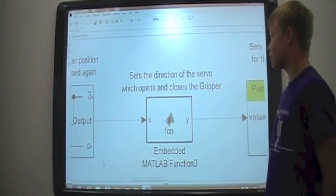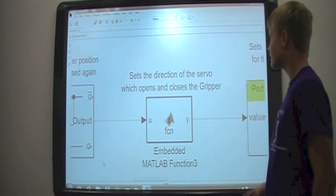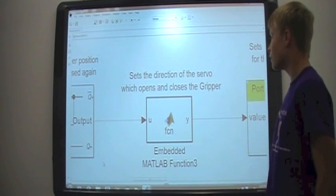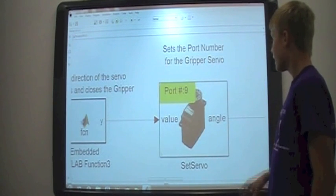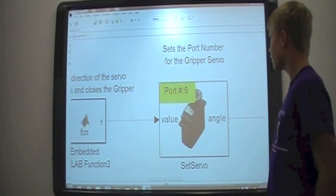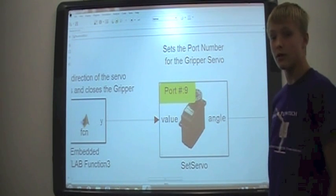And this is the MATLAB function block that was used on our gripper and it sets the direction of the servo which opens and closes the gripper. This block right here is the servo block and it sets the port number for the gripper servo.